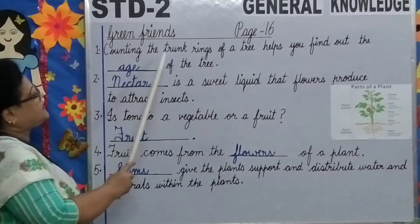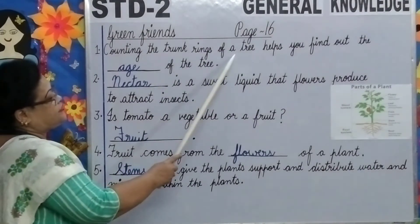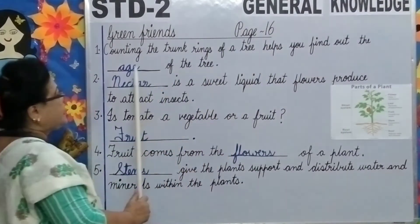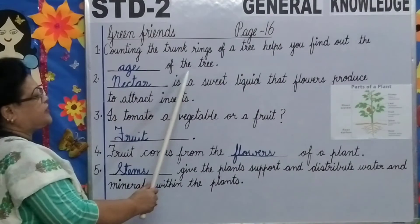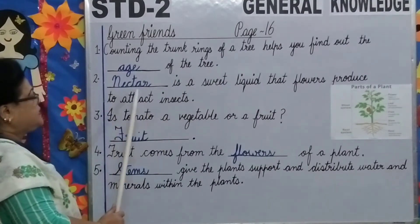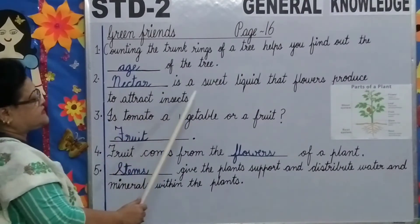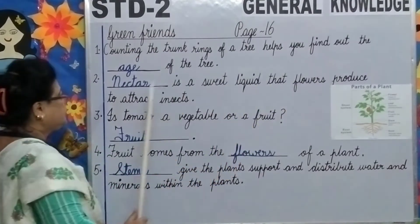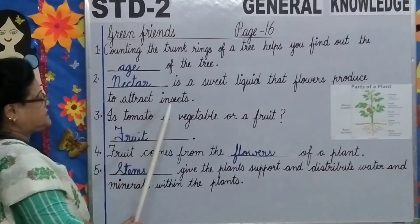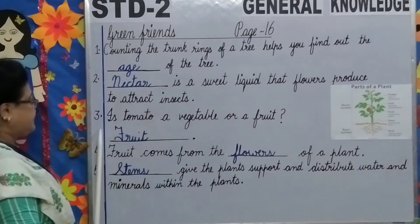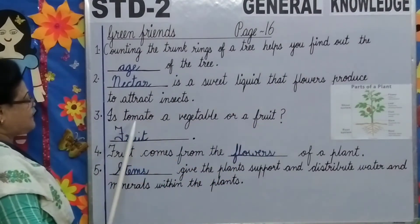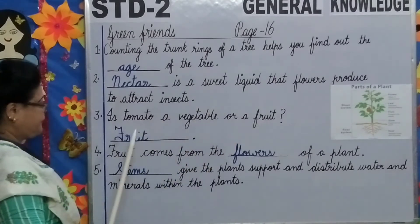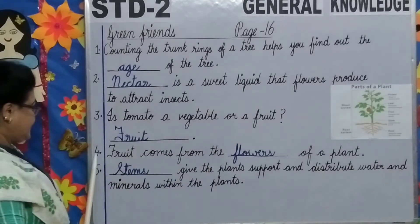Let us read the sentences along with the answers. Number 1: Counting the trunk rings of a tree helps you find out the age of the tree. Number 2: Nectar is a sweet liquid that flowers produce to attract insects. Number 3: Is tomato a vegetable or a fruit? Fruit.